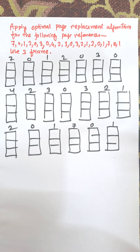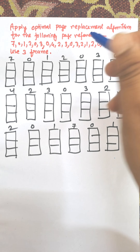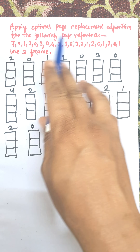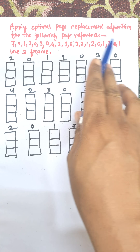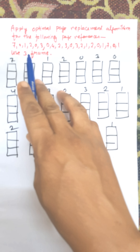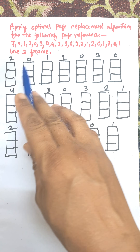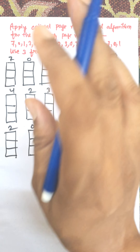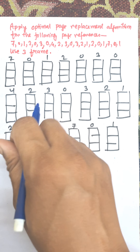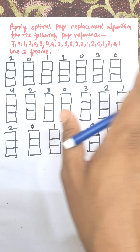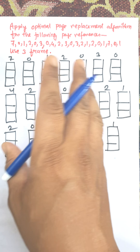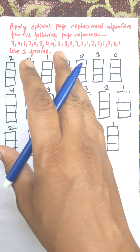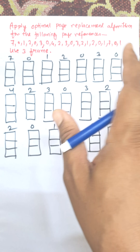Hi everybody. In this video I am going to discuss the optimal page replacement algorithm for the following page reference. First of all, we need to draw all the page references using 3 frames in the memory. Optimal page replacement is a forward technique — it looks into the future sequence of page references.